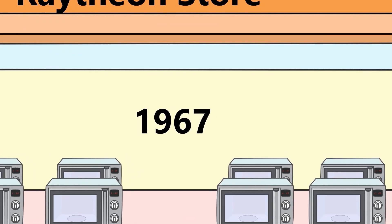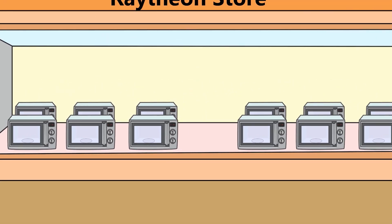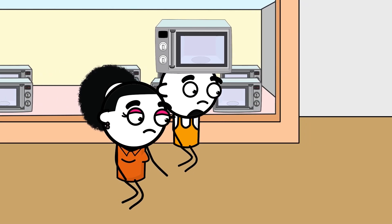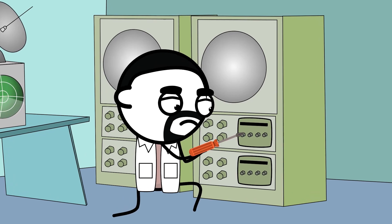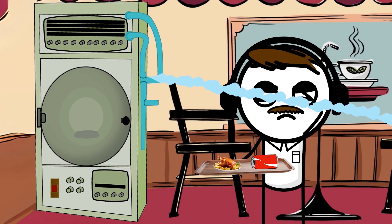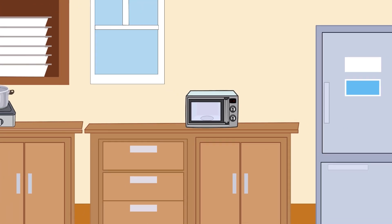Finally, in 1967, the breakthrough came. The first compact countertop microwave oven was released at a price the average family could actually afford. It was an instant sensation. After a 20-year journey through secret labs, military bases, and failed restaurant trials, the revolution could finally begin in the heart of the home.